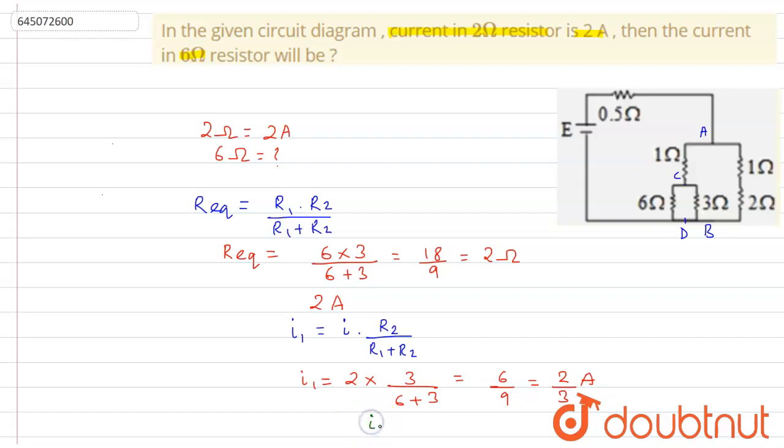Our final answer is that the current through 6 ohm resistor was 2 by 3 ampere. I hope you understood the explanation. Thank you.